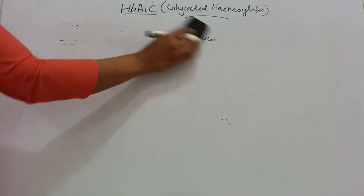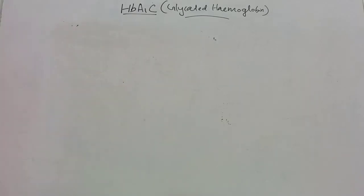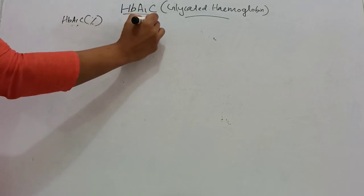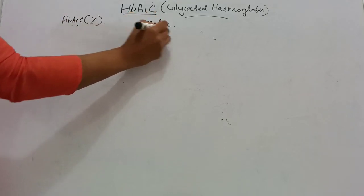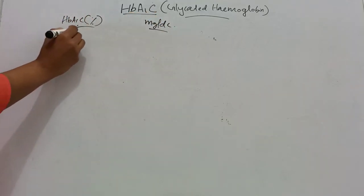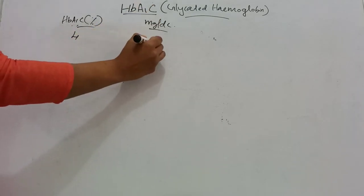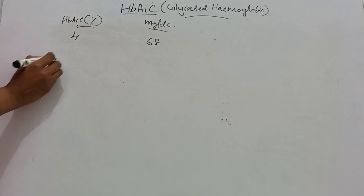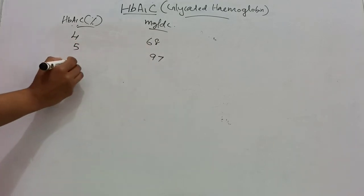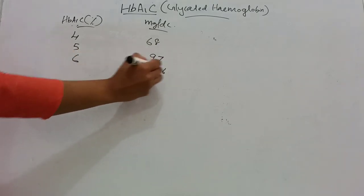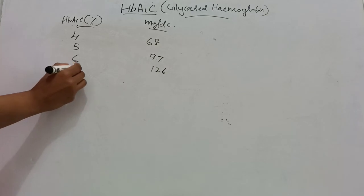Coming to the levels: HbA1c in percentage and blood glucose level in mg per dL. If it is 4%, it means 68 mg/dL. If it is 5%, it means 97 mg/dL. If it is 6%, it means 126 mg/dL. 7% is 154.